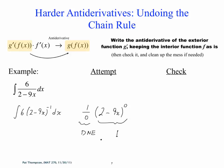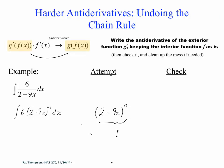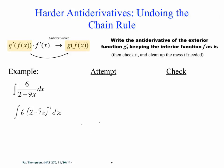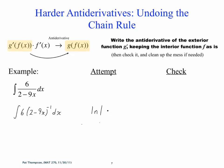What function, when you take the derivative of it, gives you something to the negative 1? It's just 1 over 2 minus 9x. What function gives the derivative of 1 over 2 minus 9x? Natural log. So what's our attempt going to be? Natural log of 2 minus 9x.